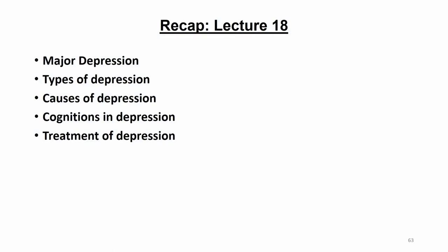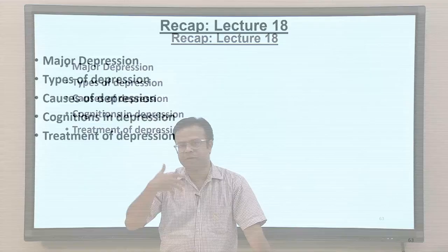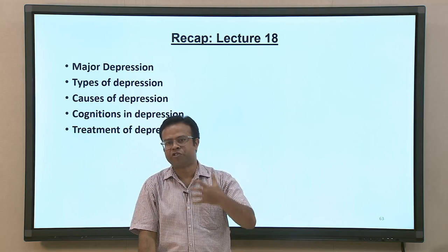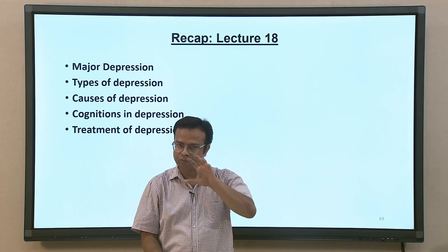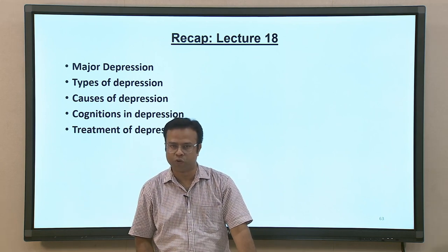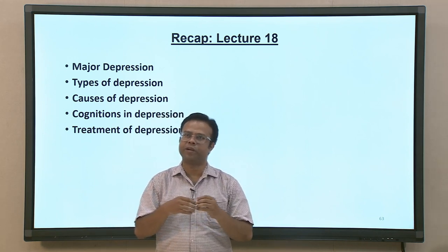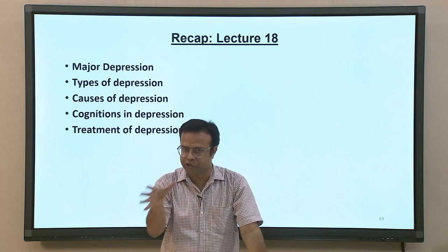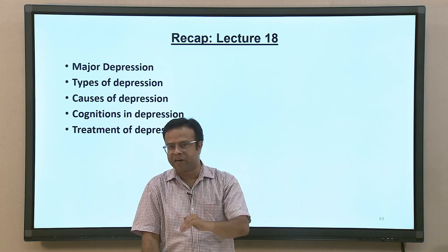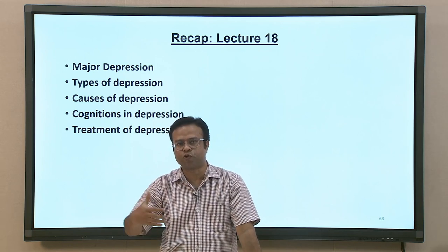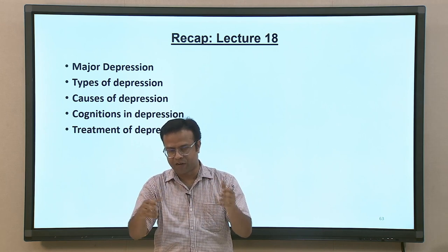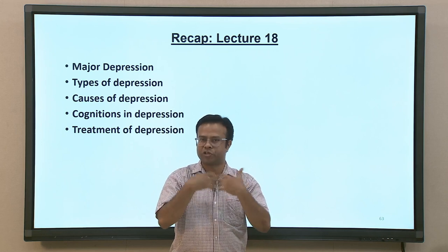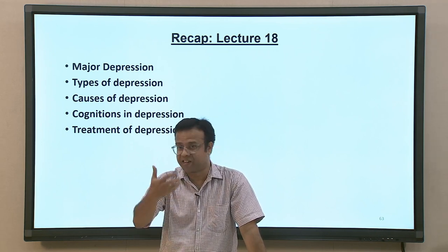A brief recap of the last lecture: we discussed depression as a disorder, specifically the various symptoms of major depression and how they manifest at different extremes — for example, too much or too little sleep. We also discussed possible reasons behind those extreme symptoms and different ways people categorize depression, including typical depression, atypical depression, and DSM-5 categories like major depression and persistent depressive disorder.